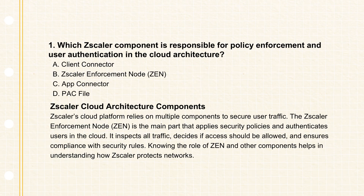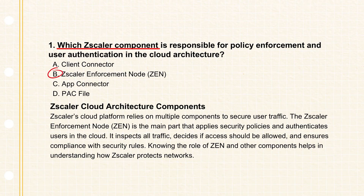Let's unpack this using these questions to navigate some really key bits of secure access. Starting right at the core: in ZScaler's cloud setup, the main component doing the heavy lifting for policy enforcement and checking who users are is the ZScaler Enforcement Node, or ZEN for short. Think of it as the real workhorse in the ZScaler cloud. Its job is basically to enforce all your security rules and authenticate users — it inspects traffic inline, right in the data path, applying those policies you've set up: allow this, block that, making sure connections are secure and compliant, no matter where the user is.